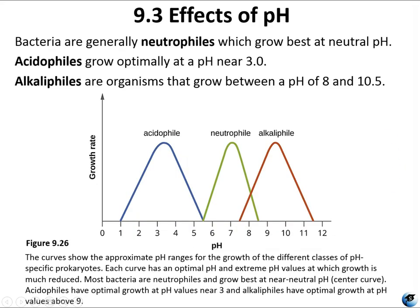Bacteria are generally neutrophiles, meaning most bacteria grow at neutral pH — a pH of seven. All human pathogens are generally at pH 7 because that's the pH of your blood. However, your stomach is not neutral, so pathogens that live in the stomach must survive in low pH — those are called acidophiles, growing near pH 3. Alkalophiles grow at high pH. On a growth-rate-versus-pH chart, acidophiles thrive in acidic environments, neutrophiles in mid-range neutral pH, and alkalophiles in alkaline high-pH environments.